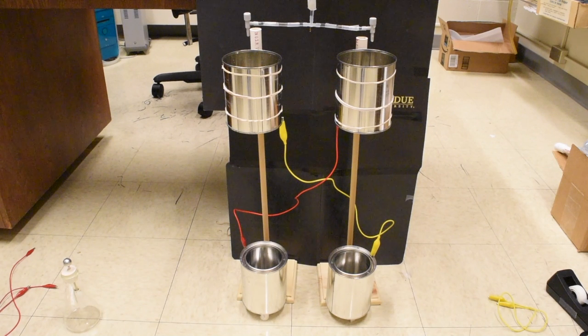I am going to demonstrate an invention of Lord Kelvin's, which he referred to as the water dropper condenser. Condenser was the original name for capacitor. It has also been called Lord Kelvin's hydroelectric generator, Lord Kelvin's electrostatic generator, or Lord Kelvin's thunderstorm.